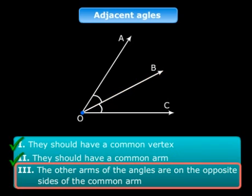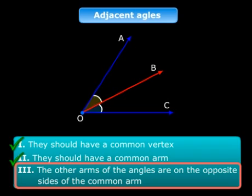And the other arms have to be on the opposite sides of the common arm. So OA and OC, as you can see, are on the opposite sides of the common arm OB. So these two angles AOB and BOC are adjacent angles.